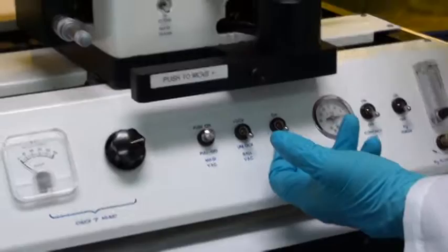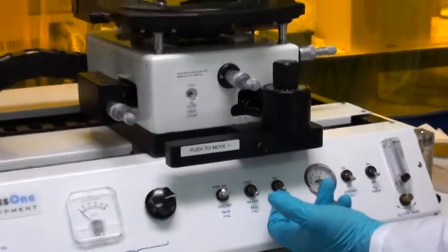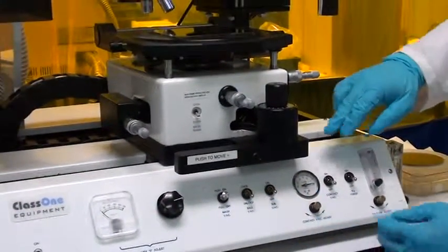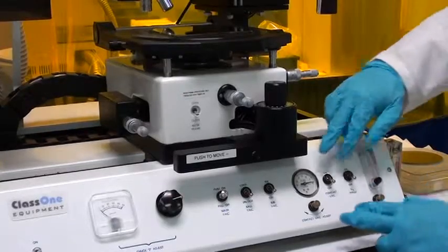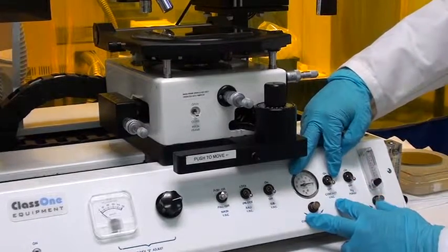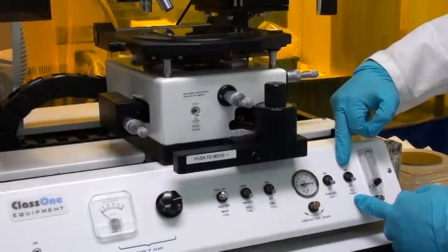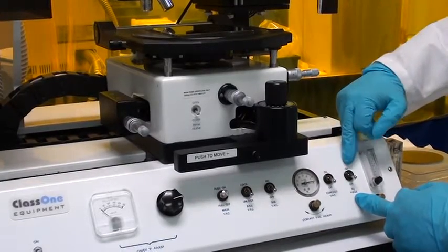Here is our substrate vacuum, which holds our wafer to the chuck. Next, if we're going to run contact vacuum, we have some adjustments for that to control the amount of vacuum. And we also have our nitrogen purge to release the vacuum when we're done with the system.